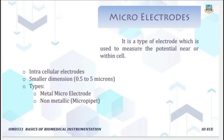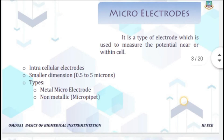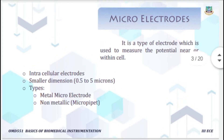What is a micro electrode? Micro electrodes are used to measure the bioelectric potential near or within a single cell. They are also called intracellular electrodes. Micro electrodes are divided into metallic and non-metallic types. They have a small diameter so that during insertion into the cell, they will not cause any damage. During potential measurement, the micro electrode is placed within the cell and the reference electrode is placed outside the cell.